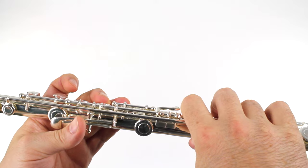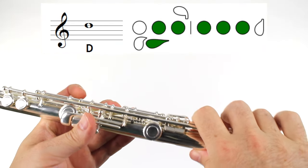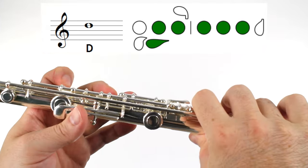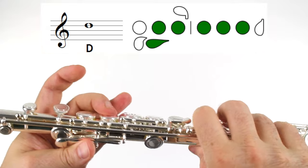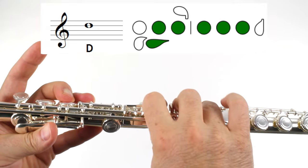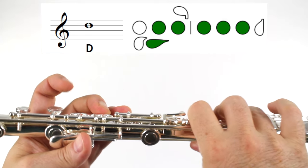The first note we learned was D, and if we look at our D fingering chart, we remember that we have the following home keys pressed down. Our left hand thumb, no first finger, our second finger and third finger are pressed down, and our one, two, three fingers on our right hand are pressed down, and no pinkies. That is our D note.